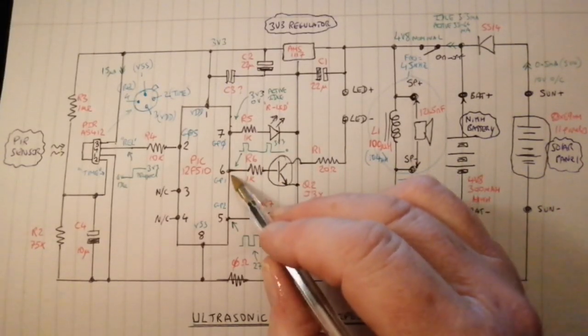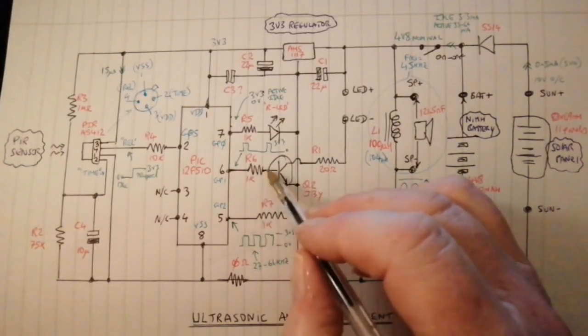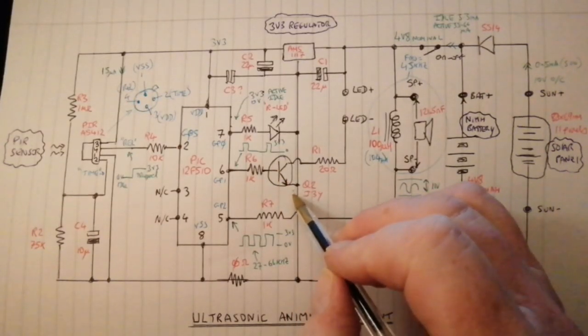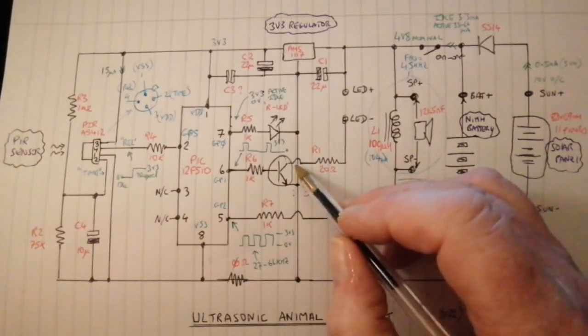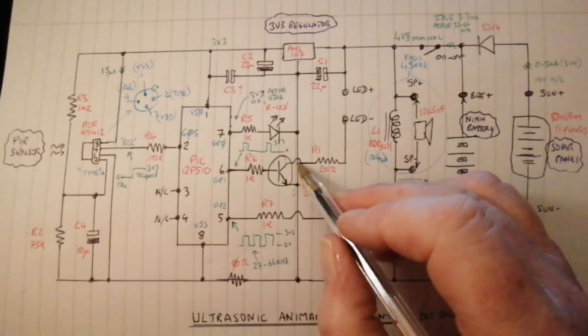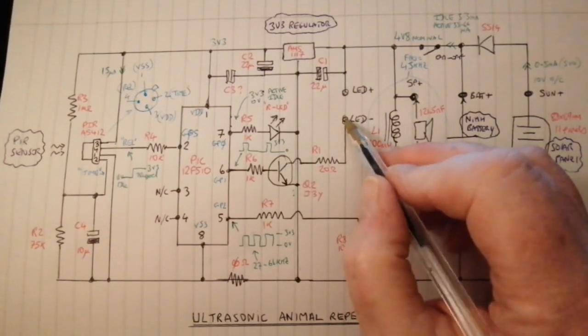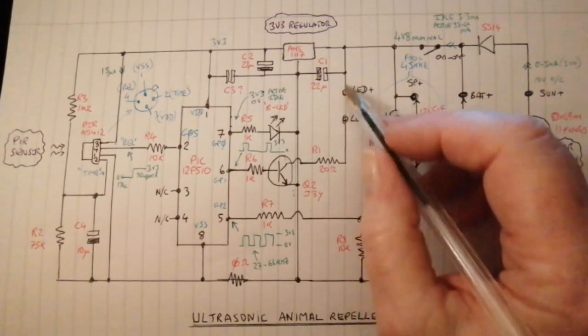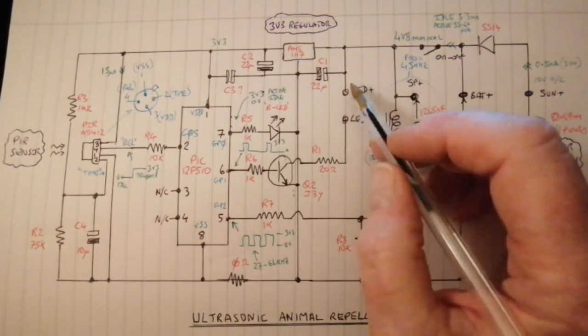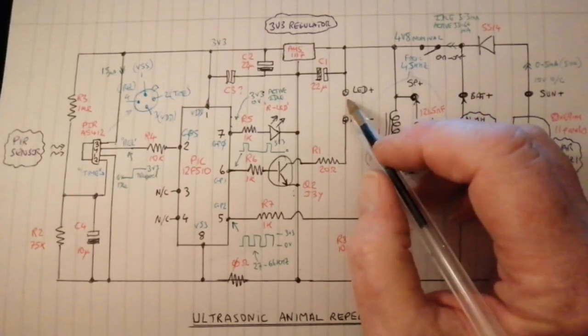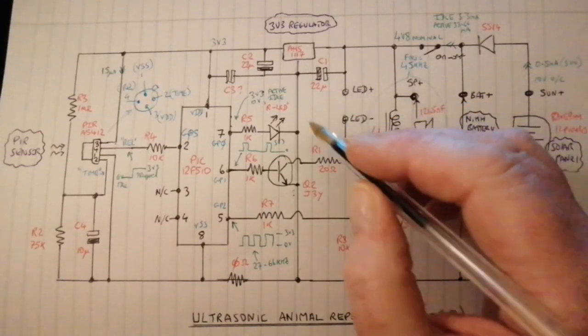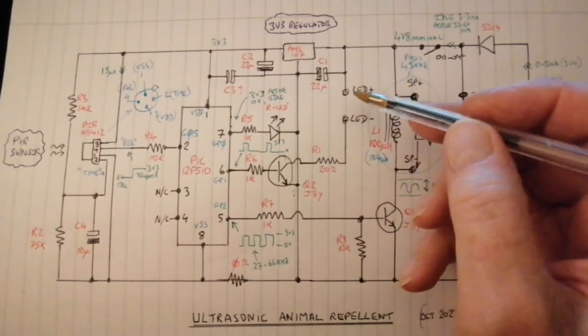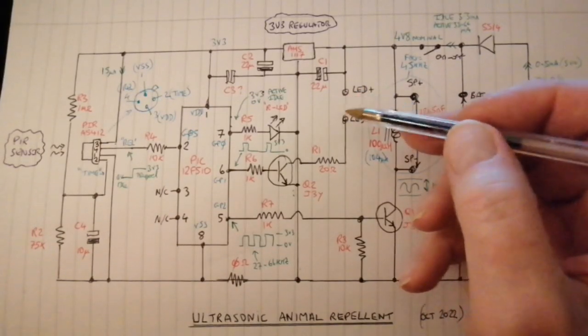The GP1 output of the PIC feeds the base of Q2, which is a J3Y silicon NPN transistor, via R6 which is a 1K. The emitter goes to ground. The collector goes via a 20 ohm resistor to the LED minus pad. This is the LED which flashes on and off at a slow speed when it's triggered, which isn't fitted in this unit. There are holes for a socket marked LED, but it's not fitted.